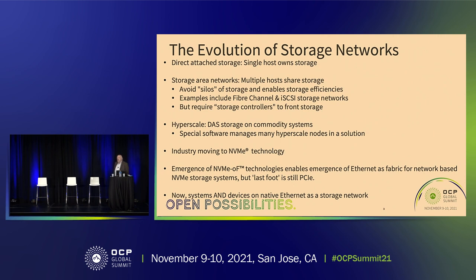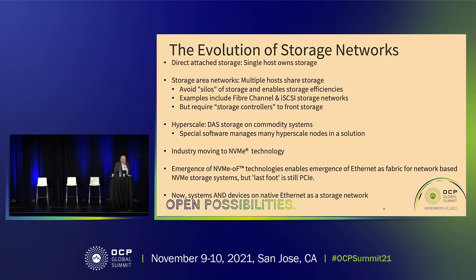It's a little bit future-looking, but I want to start with some history that newcomers may not know. At one point in time, all storage was pretty much direct-attached, and a single host owns that storage. Then we introduced storage area networks, where multiple hosts can share that storage, which avoids siloing and enables storage efficiencies. Examples from history include Fiber Channel and iSCSI storage networks. Those are still around today. The main architectural concept is there is a storage controller in front of any of the drives in these SANs — storage area networks.